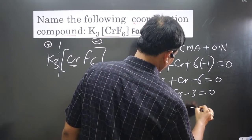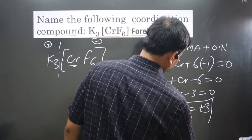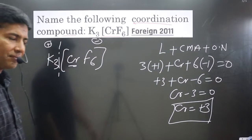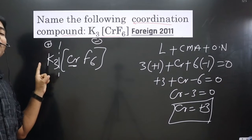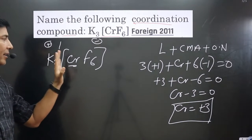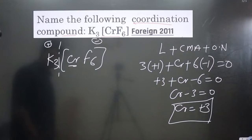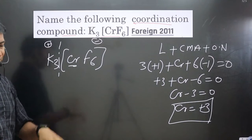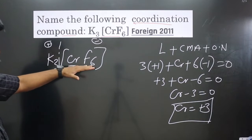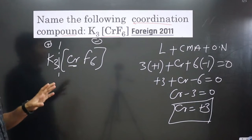When we start naming, first we have to name the cationic and then the anionic. In this case, we have the counter ion followed by anionic complex.